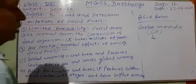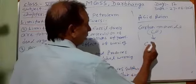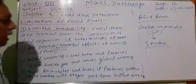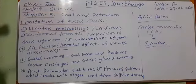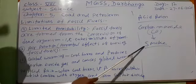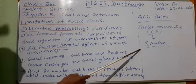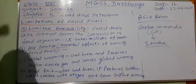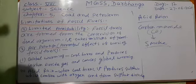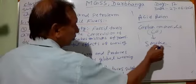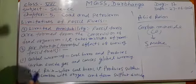When coal burns, it releases smoke. Smoke contains a large number of unburned carbon particles. When this smoke goes to the atmosphere and is inhaled by a person, it causes breathing problems and respiratory problems. And due to unburned carbon particles, wherever the smoke goes, the place becomes black.